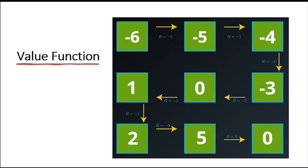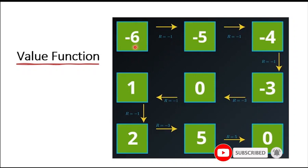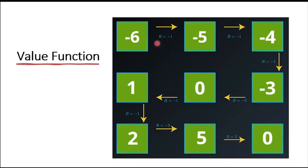We are going to elaborate the concept of the value function with a grid world example. We are working with this grid world and looking for the best policy that leads us to a goal state as quickly as possible. Let's calculate the cumulative reward if the agent starts in the top-left corner and follows this policy to reach the goal state. The cumulative reward along the way is minus 1 plus minus 1 plus minus 1 plus minus 3 plus minus 1 plus minus 1 plus minus 3 plus 5, which equals minus 6.